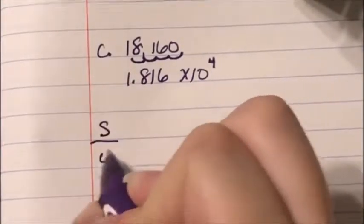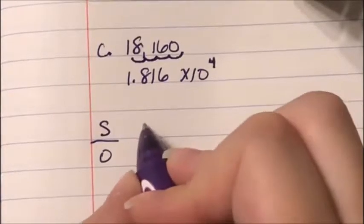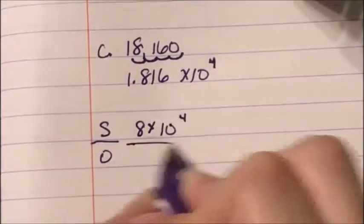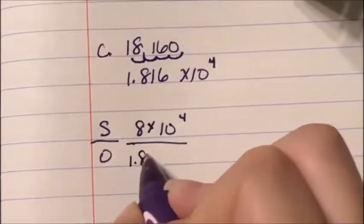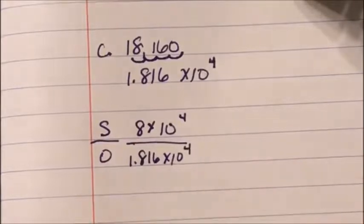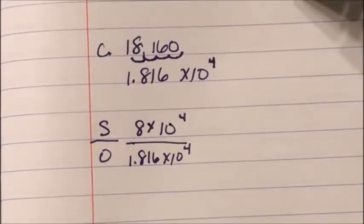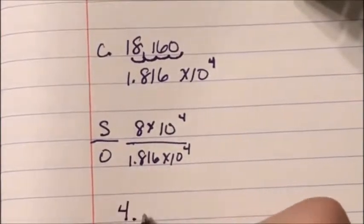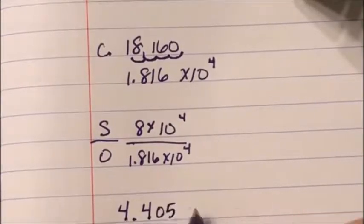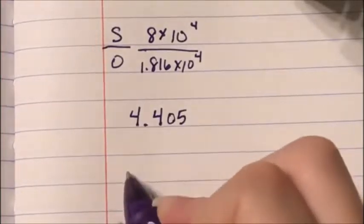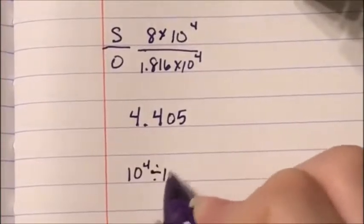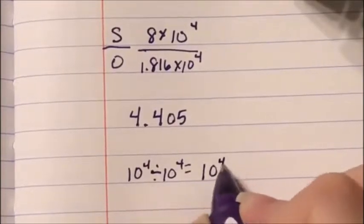Now I divide Superior by Ontario: (8×10⁴) ÷ (1.816×10⁴). Eight divided by 1.816 is approximately 4.405. For the exponents, using Quotient of Powers: 10⁴ divided by 10⁴ is 10 to the (4−4), which is 10⁰.